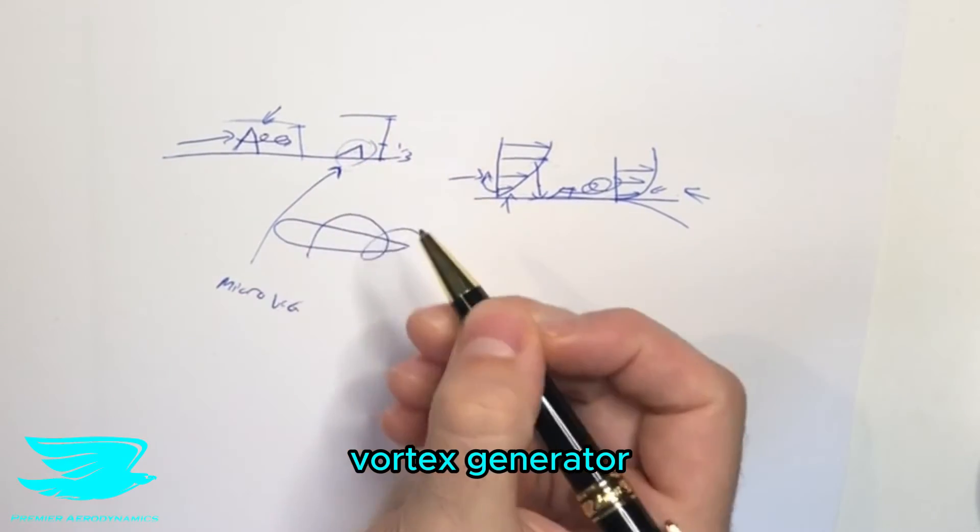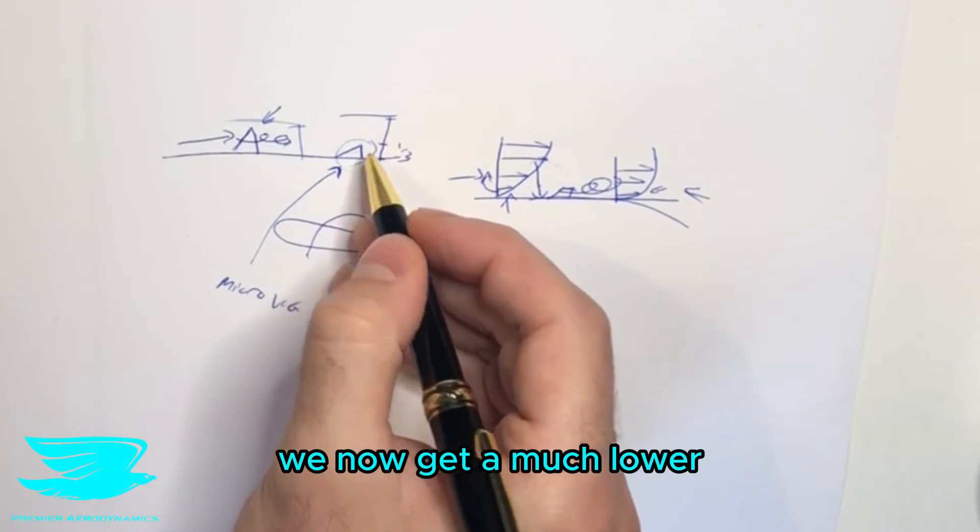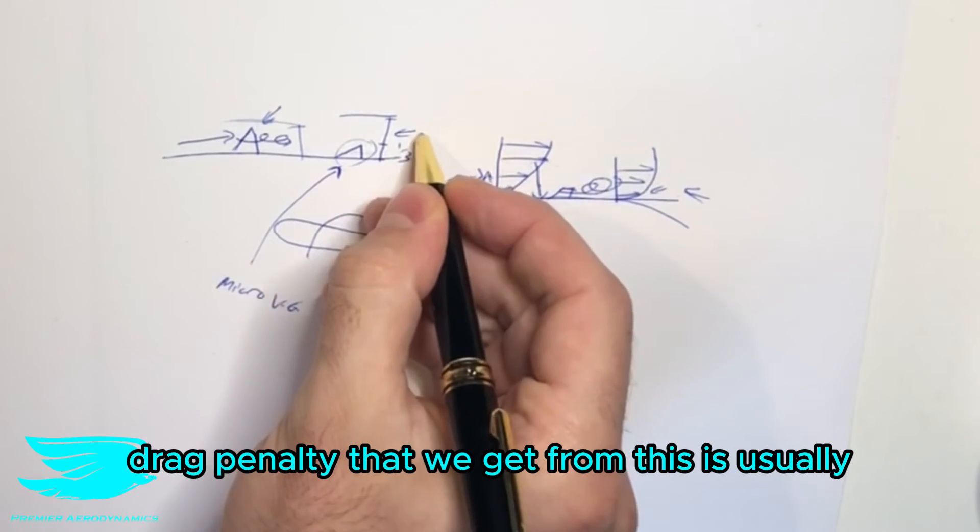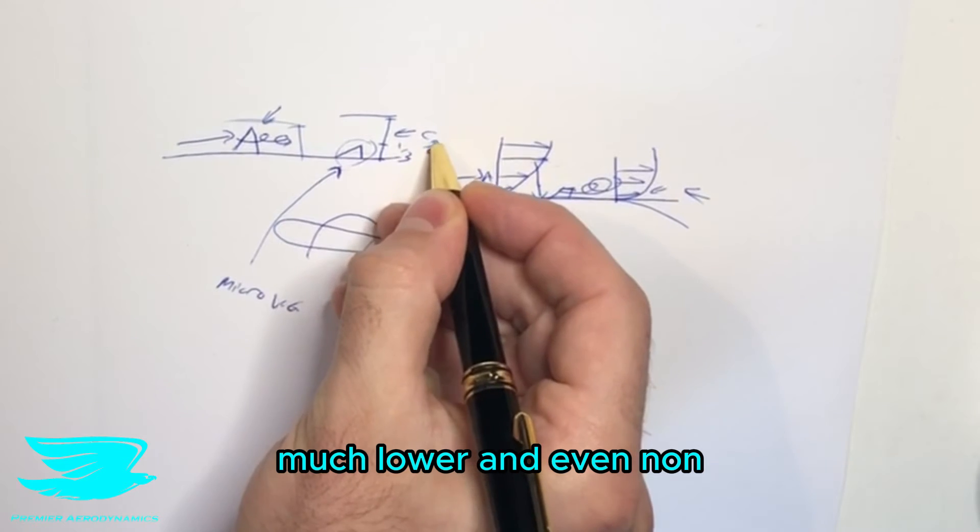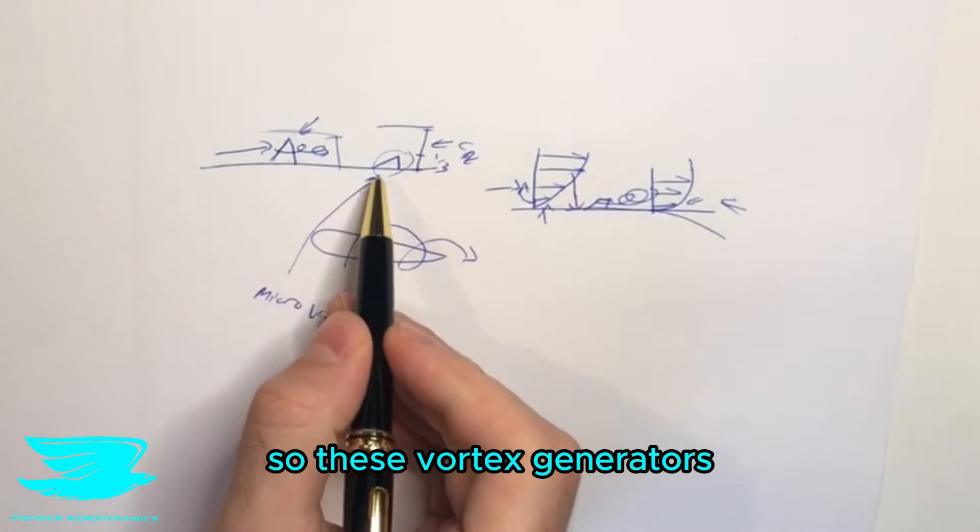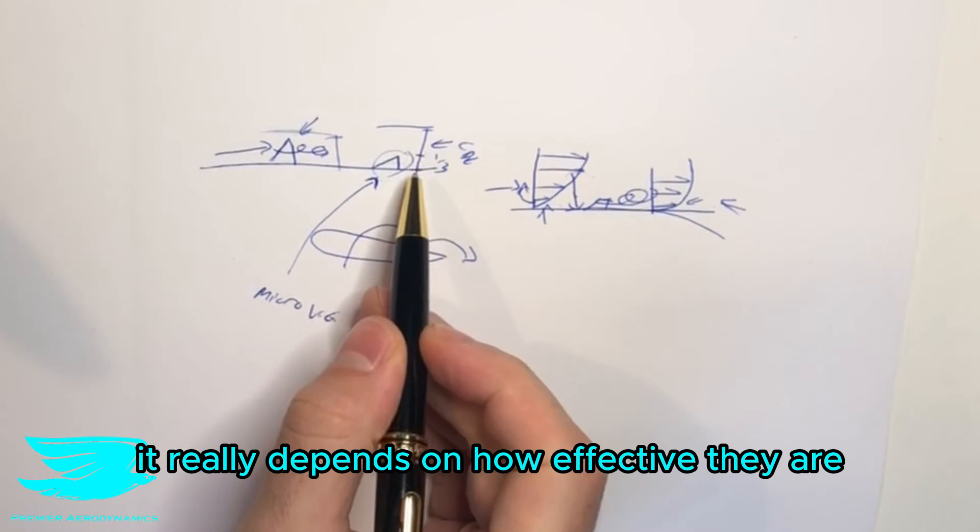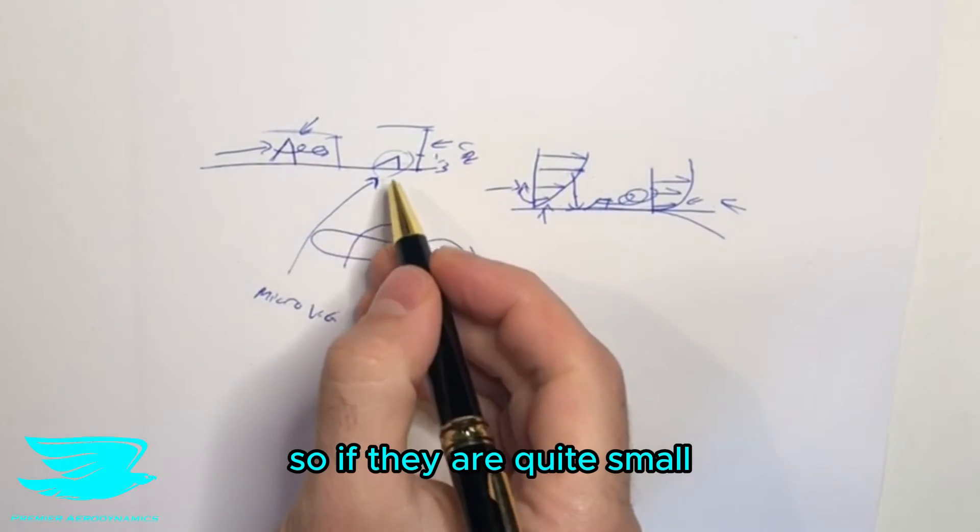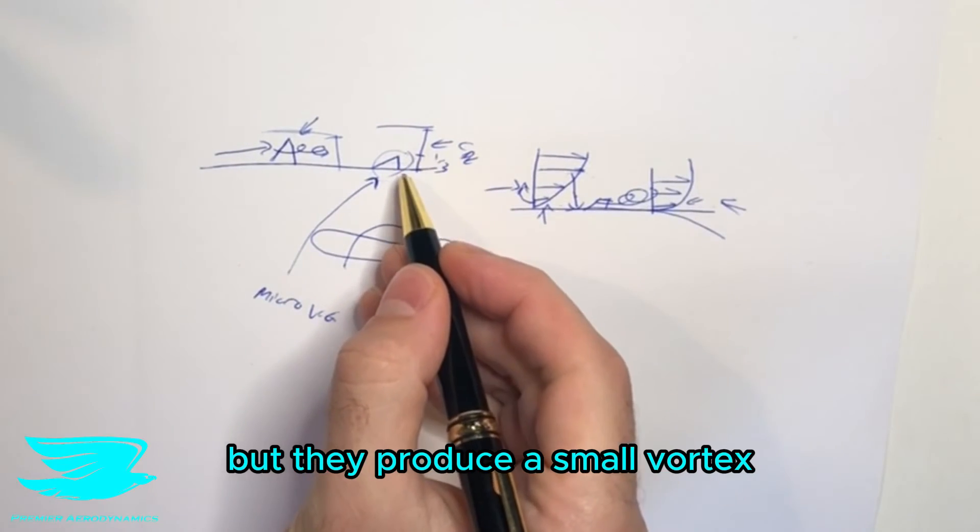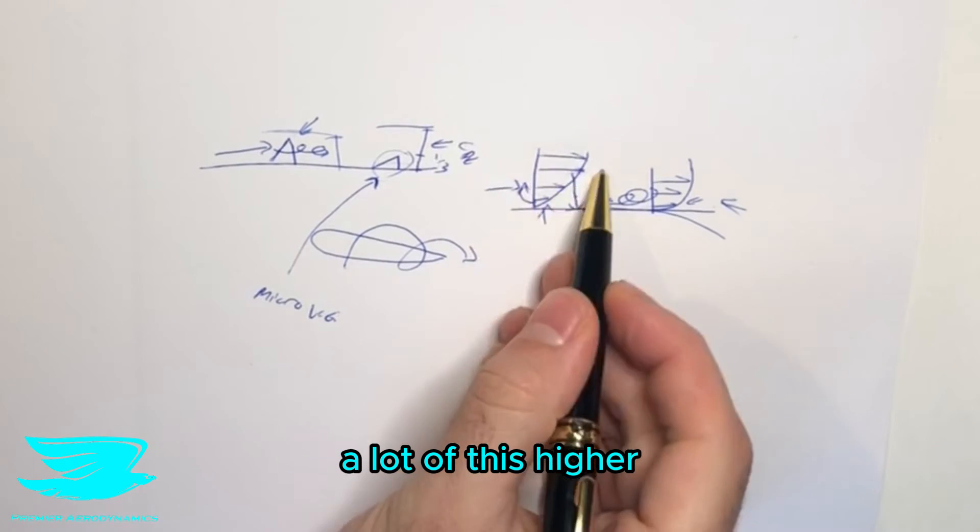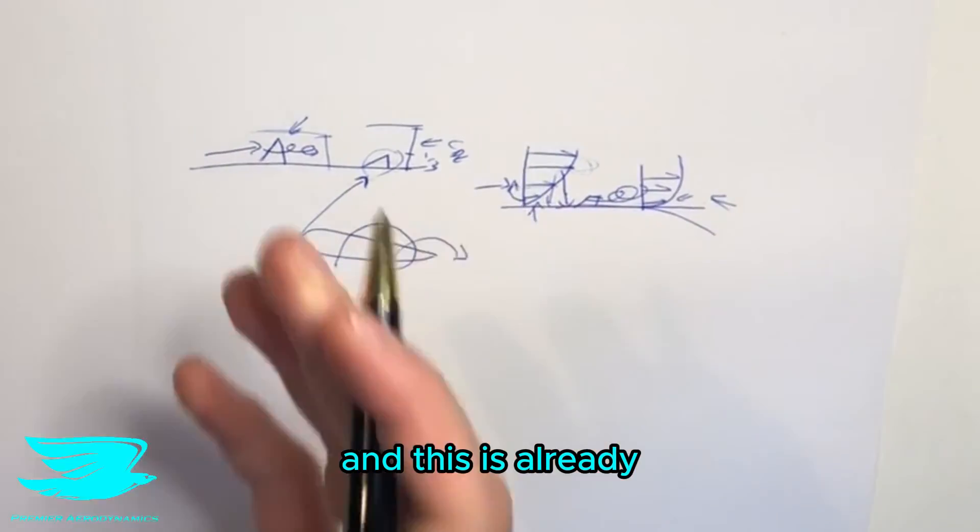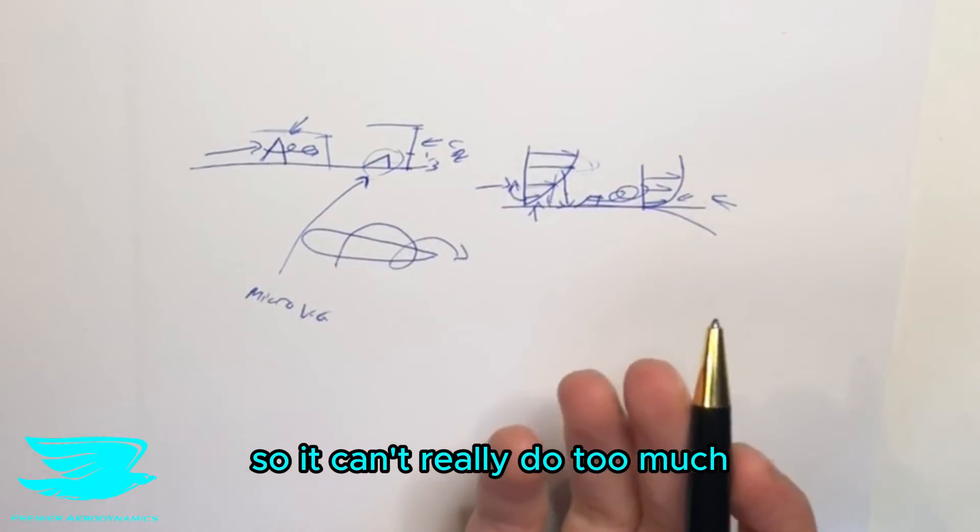Alternatively, with this micro vortex generator, we now get a much lower pressure drag out of this. So the drag penalty that we get from this is usually much lower and even non-existent sometimes. So these micro vortex generators, it really depends on how effective they are in terms of how big a vortex they produce. So if they are quite small, but they produce a small vortex, then that's not really going to wash a lot of this higher momentum fluid down here. It's going to more operate in this region. And this is already slow moving fluid, so it can't really do too much.